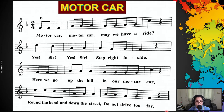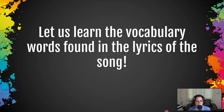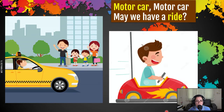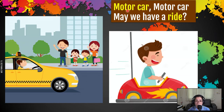Thank you for singing with us, Year 4. Next, it's time to learn the vocabulary words found in the lyrics of our song. As you can see in the picture, there's a motor car — there's a car, and there's a family waiting to take a ride. A motor car can also be called an automobile. A ride is when you want to go inside and let the driver take you where you want to go. These are the vocabulary words highlighted in yellow that you have to learn.